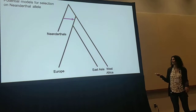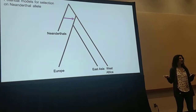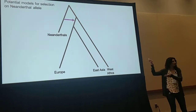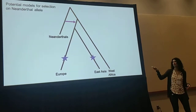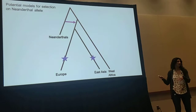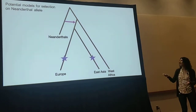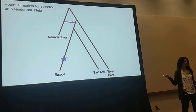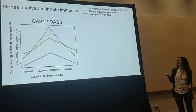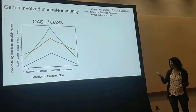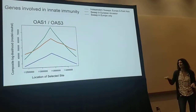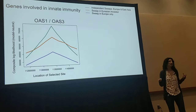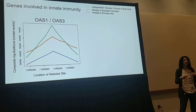I'm going to show you some results in which I ran the method just on modern populations, distinguishing between the following cases: admixture with no selection on the Neanderthal allele; independent selection in Europeans and East Asians with an intermediate neutrality period; selection in the ancestor of Europeans and East Asians; and selection only in Europeans. For OAS, an immunity gene — on the x-axis is the location of the selected site, and the y-axis shows evidence in favor of a given model relative to a model with no selection.